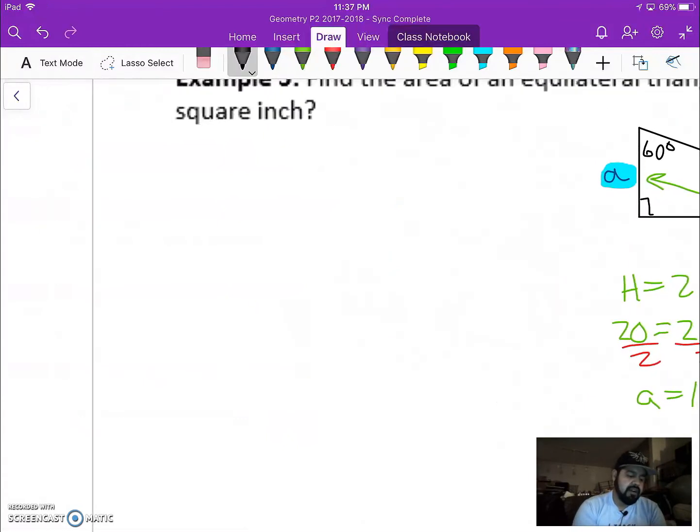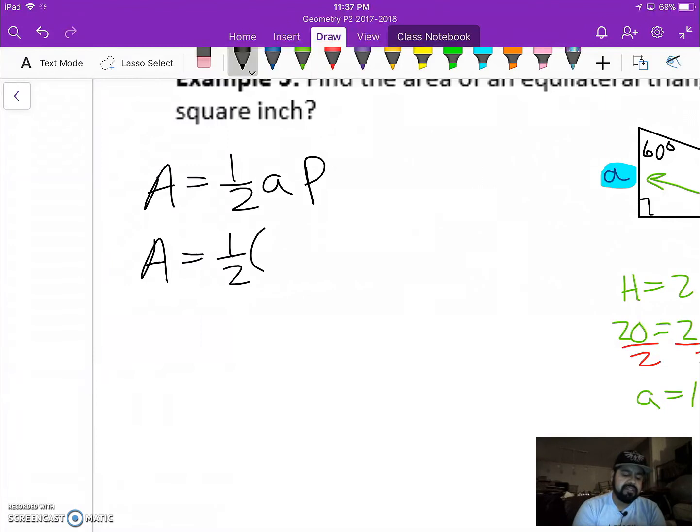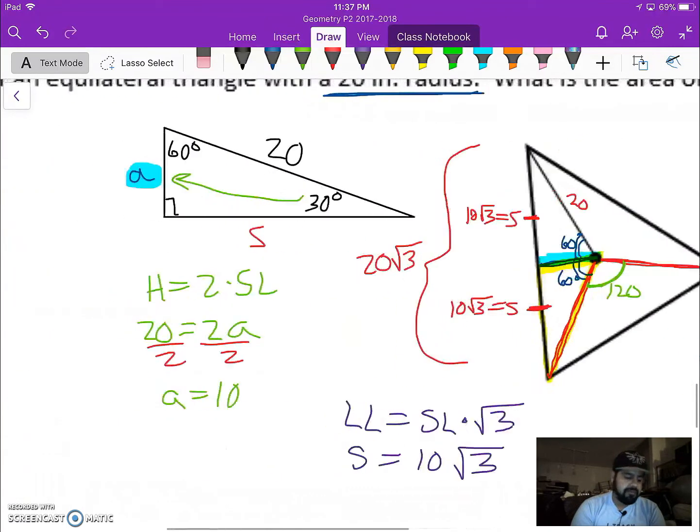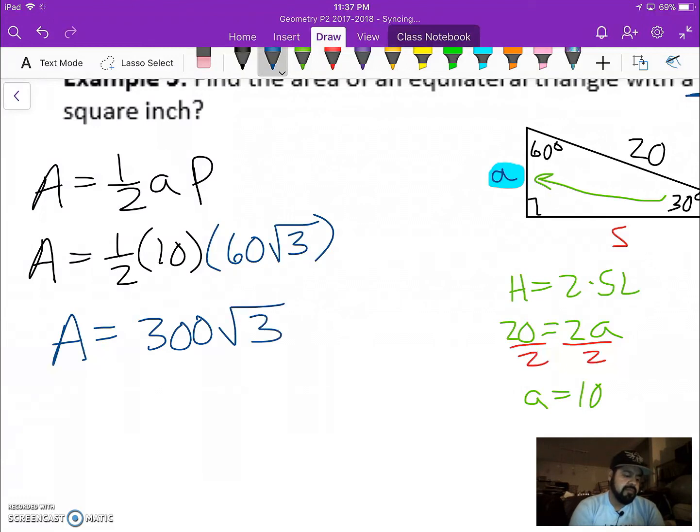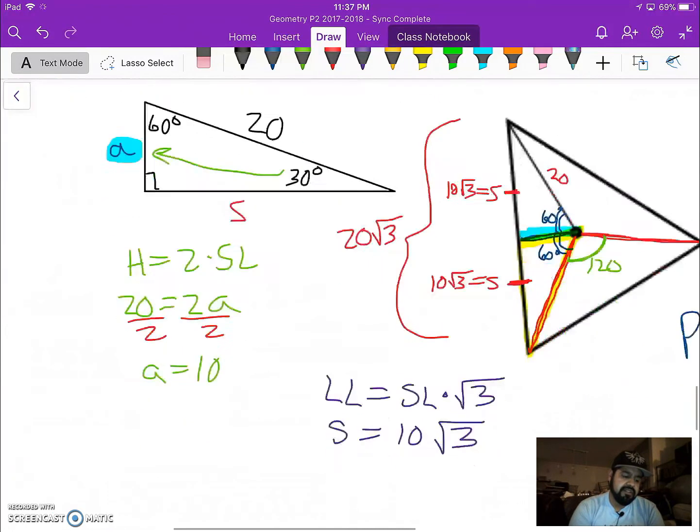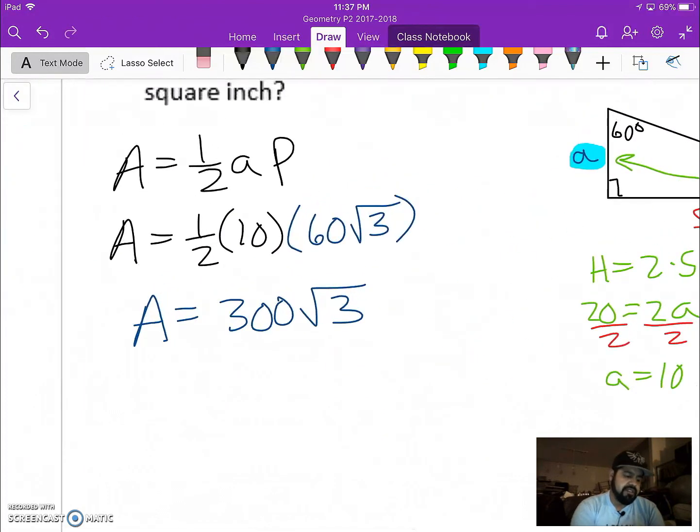So we're going to say our area equals one half ap. So one half of my apothem, which we said was 10, times my perimeter of 60 rad 3. So you could do 10 times 60, which is 600. Then take half of that answer. So therefore your area would be 300 rad 3. And since we're using inches, our units will be inches squared.